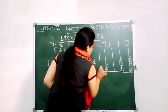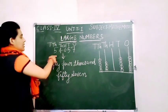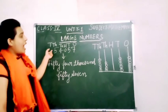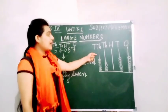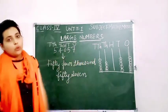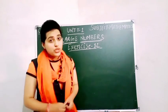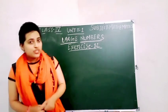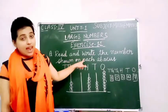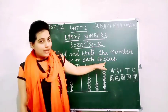And in the 10,000's place: 1, 2, 3, 4, 5. So this is the number, this is the number name, and this is how we are showing this number on the abacus. Now let's begin our exercise 1.1. Question A is: read and write the number shown on each abacus.